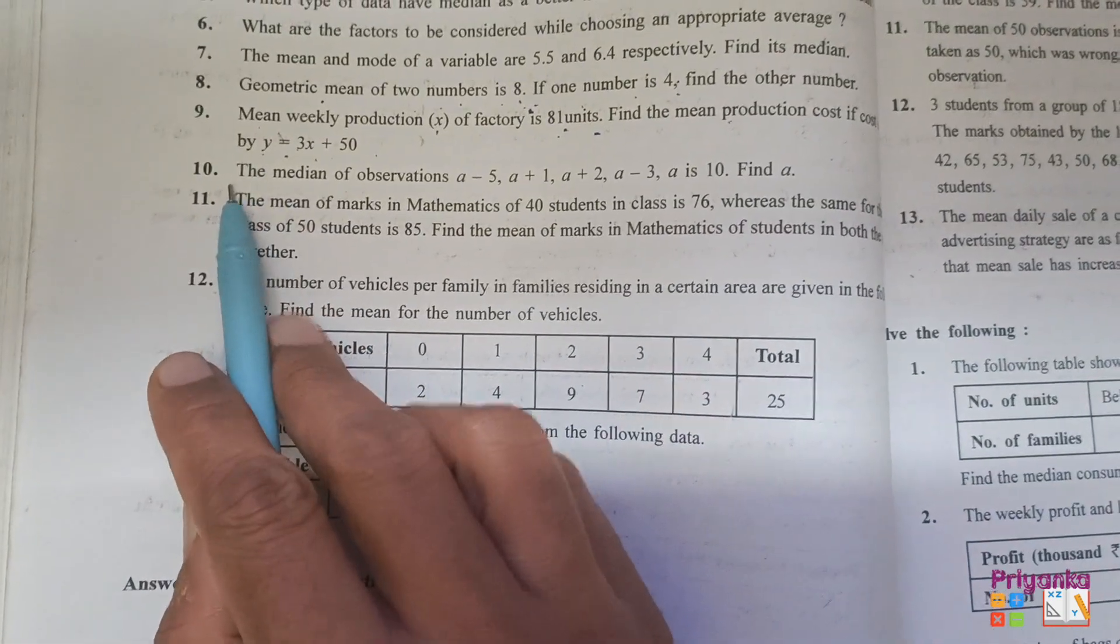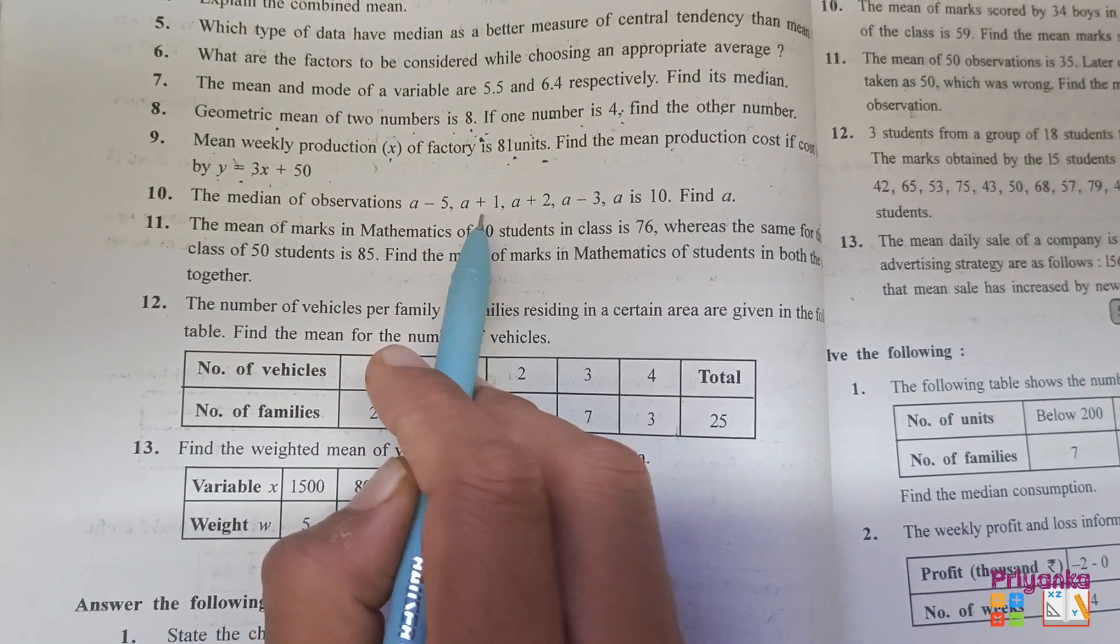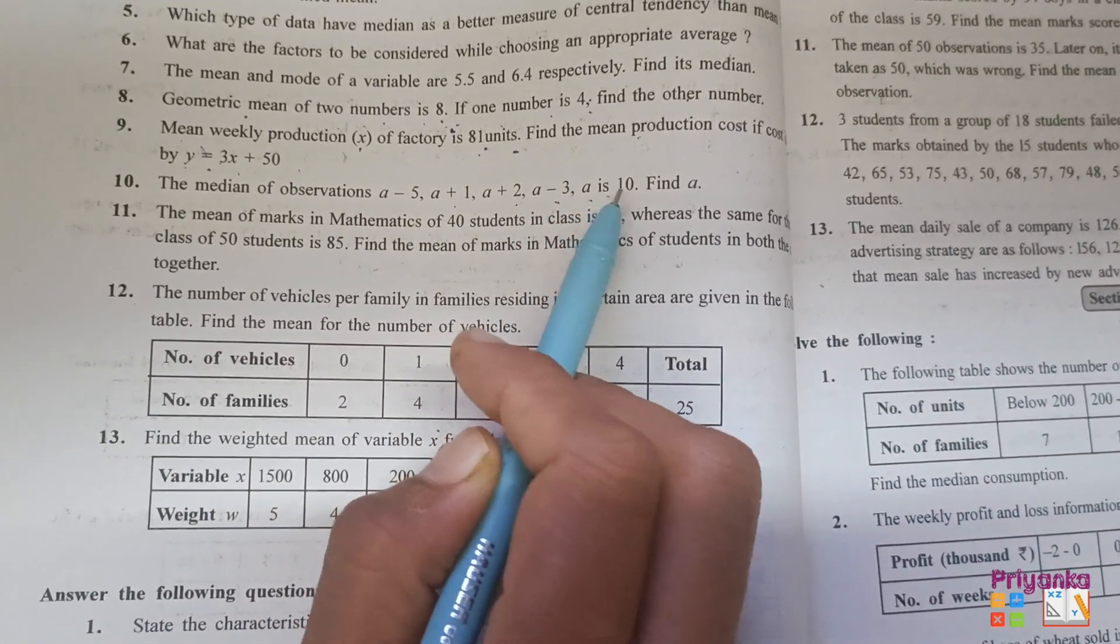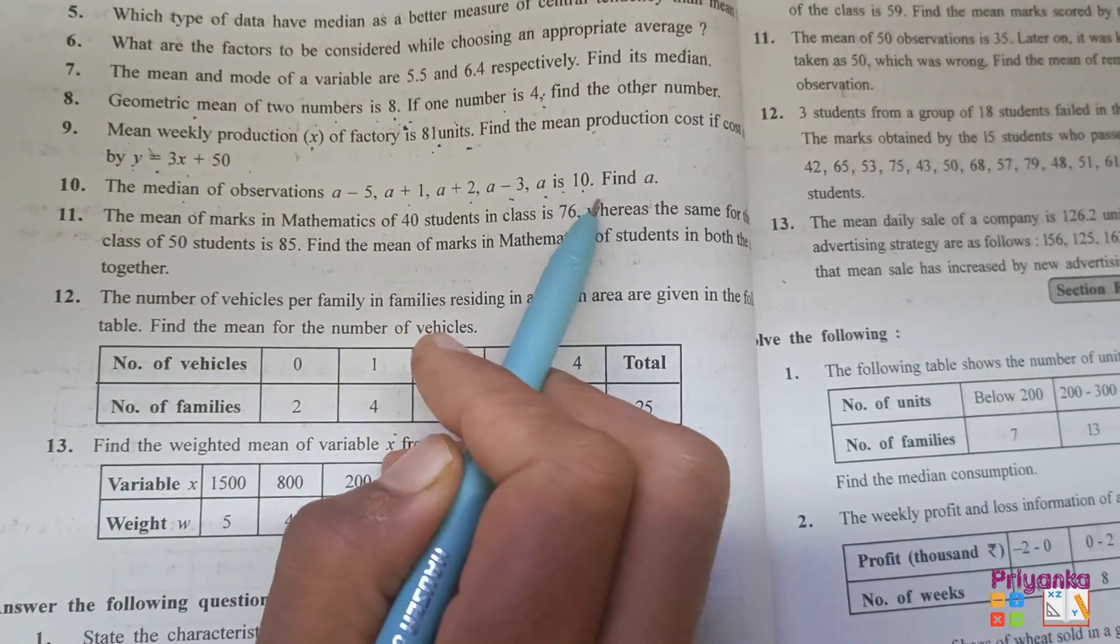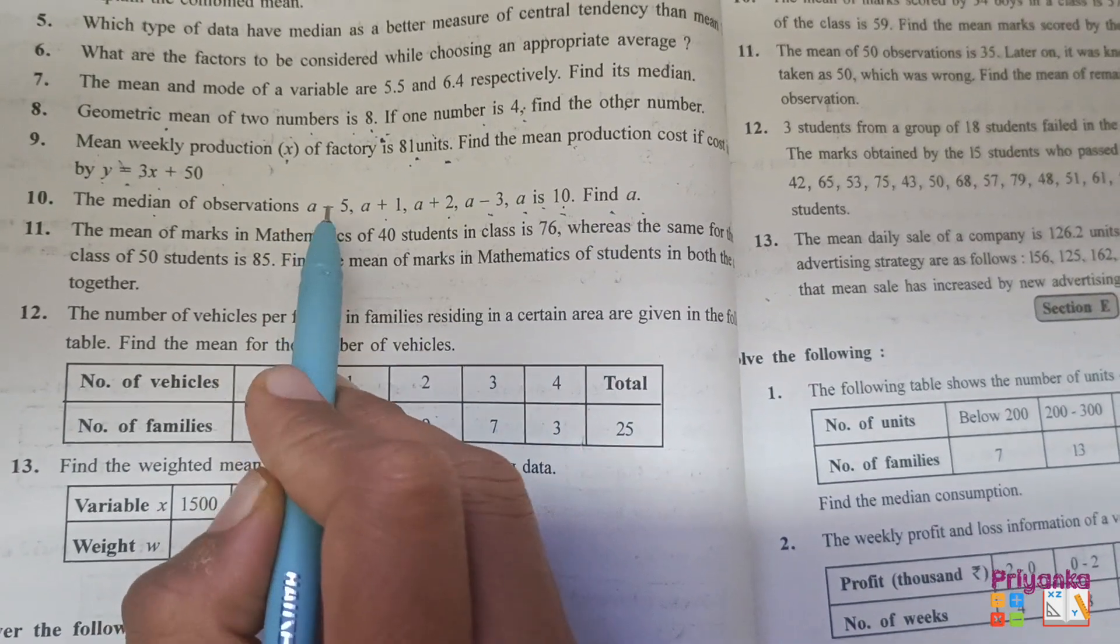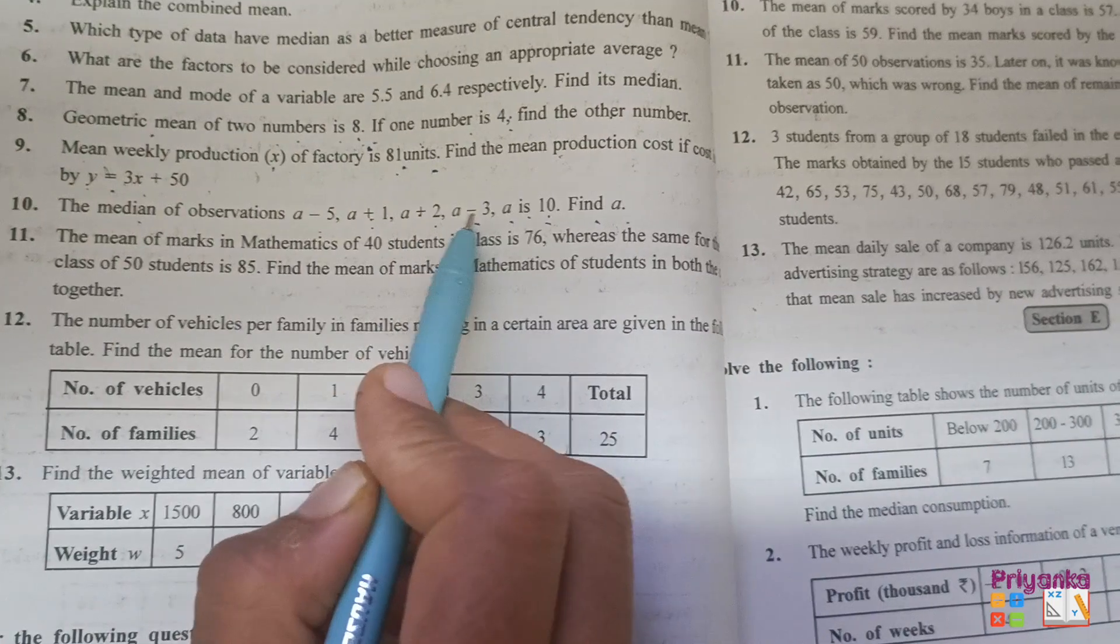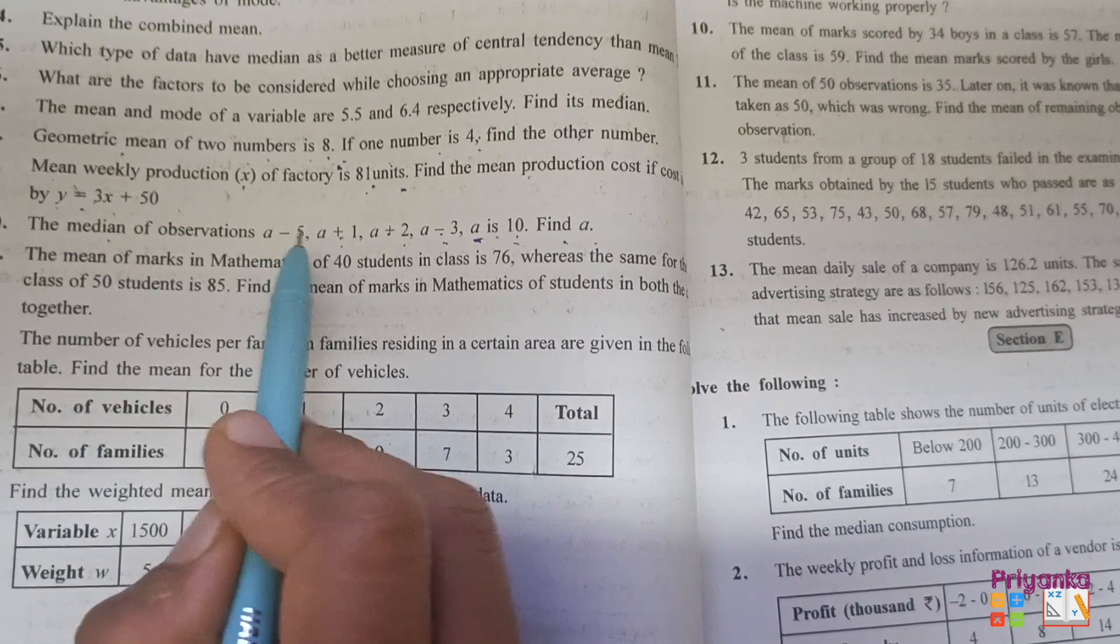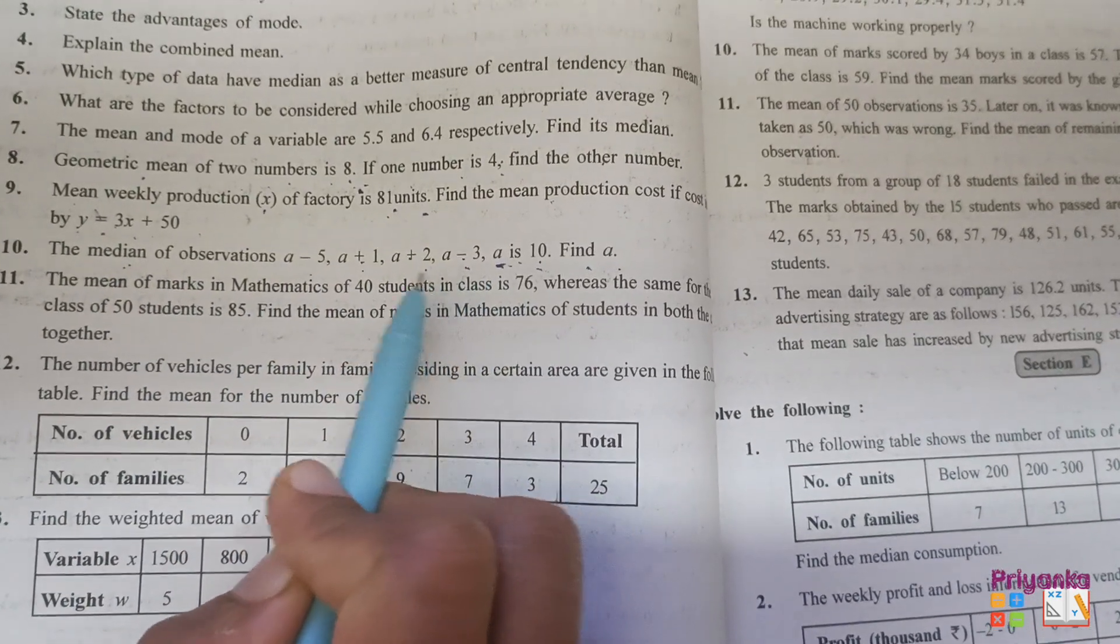Next question number 10. The median of observation a minus 5, a plus 1, a plus 2, a minus 3, a is 10. The value of median is given as 10 and the question is asking to find a. Let's see, how many observations are given: 1, 2, 3, 4, and 5.